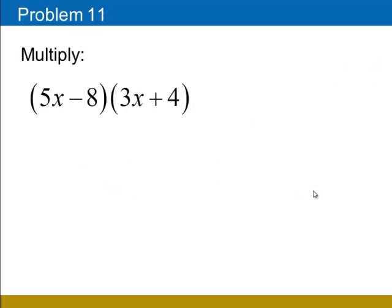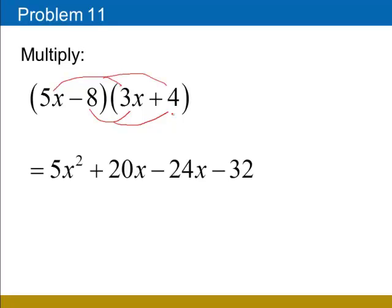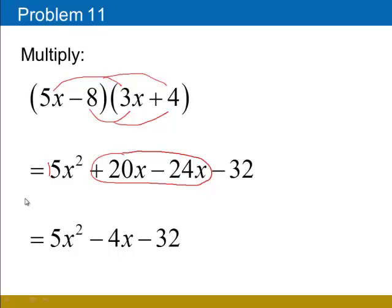On to multiplication. Many of us know this as FOIL, but what you want to remember is that you need to distribute each term in the first set of parentheses to each term in the second. We're going to multiply 5x by 3x and by 4, then multiply negative 8 by 3x and by 4, and finish by combining like terms. 5x times 3x is 15x squared, 5x times 4 is 20x, negative 8 times 3x is negative 24x, and negative 8 times 4 is negative 32. Combining like terms: 20x and negative 24x give negative 4x. So the result is 15x squared minus 4x minus 32.